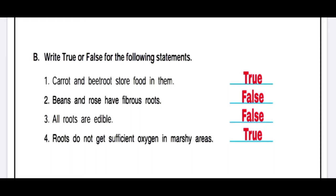Second is: Beans and rose have fibrous root. This statement is not correct because they have tap root. So the statement is False. Third one is: All roots are edible. The answer is not correct, so we put False. Fourth is: Roots do not get sufficient oxygen in marshy areas. The statement is correct, so we put True.